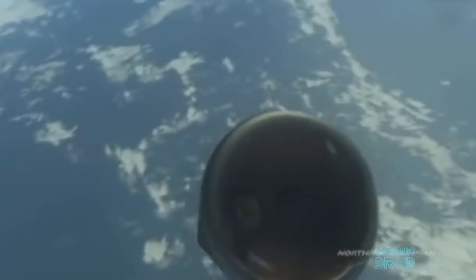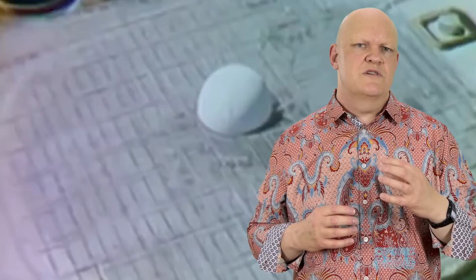Because of the ballistic trajectory, the speed of these warheads even when they come through the denser atmosphere is still in the region of 15 to 20,000 miles an hour, 24 to 31,000 kilometers an hour, up to five miles or 8.6 kilometers per second, around Mach 25.